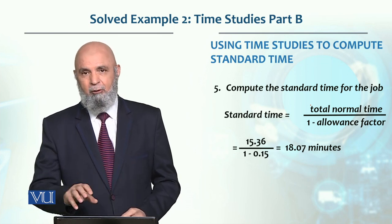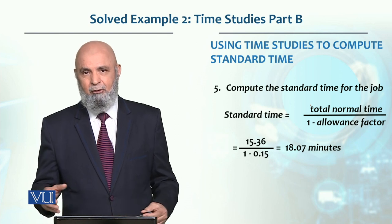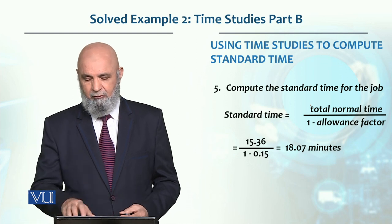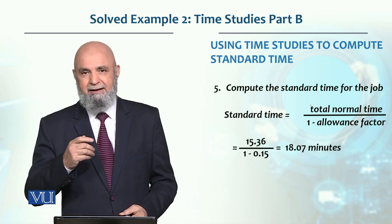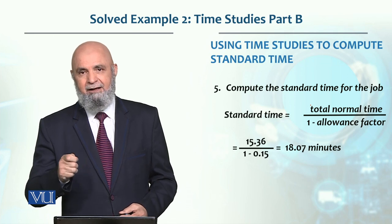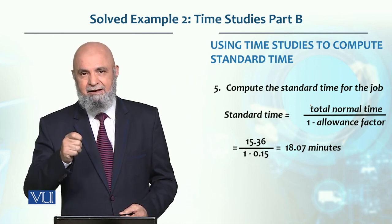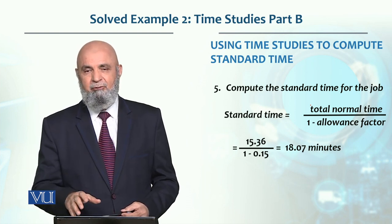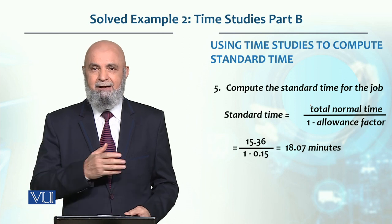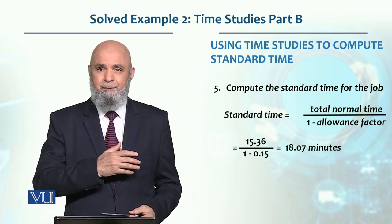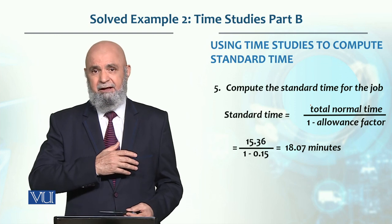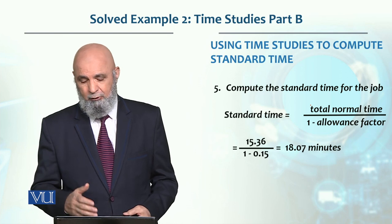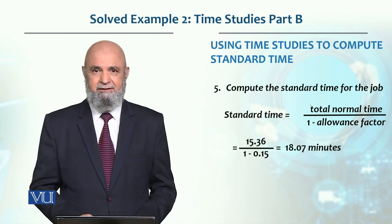So the standard time for this job, performed over the whole day with allowances incorporated, is 18.07 minutes. This means one letter should be completed and mailed in 18.07 minutes. From this we can then determine, for example, how many workers would be needed to type and send a thousand letters in an 8-hour shift.